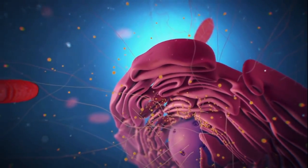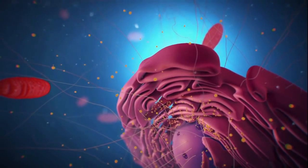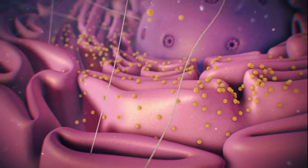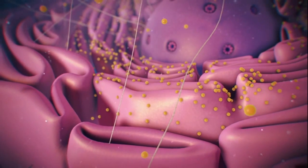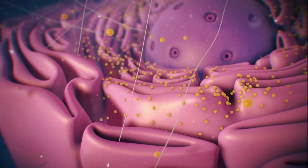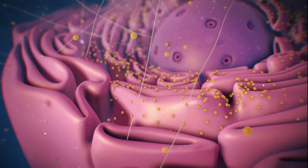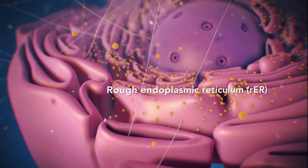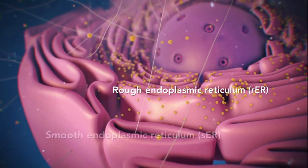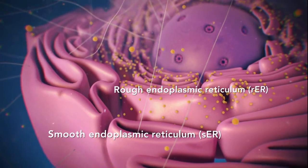Ribosomes may wander freely within the cytoplasm or attach to the endoplasmic reticulum, sometimes abbreviated as ER. There are two types of ER: rough ER has ribosomes attached to it, and smooth ER doesn't have ribosomes attached to it.